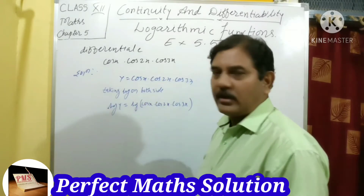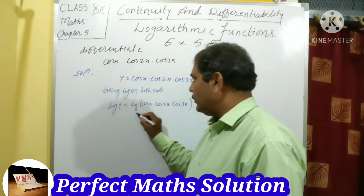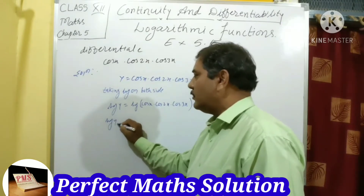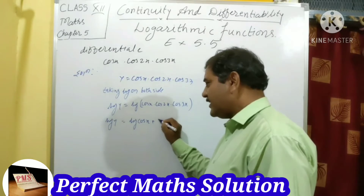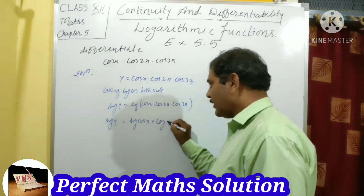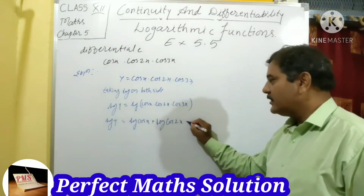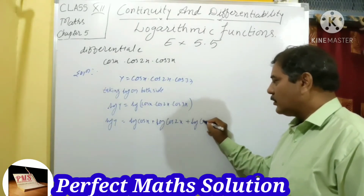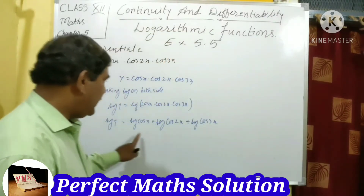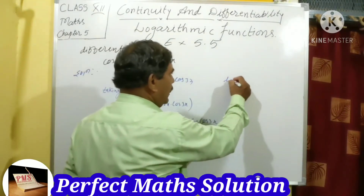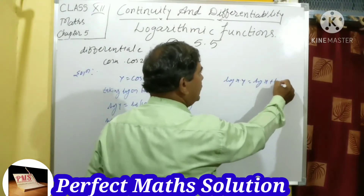log y is equal to log(cos x · cos 2x · cos 3x). Now, log y is equal to log cos x plus log cos 2x plus log cos 3x. We used the identity that log(x·y) equals log x plus log y to separate the terms.